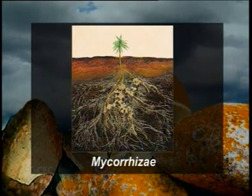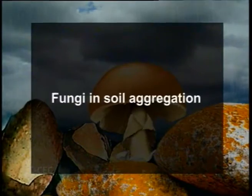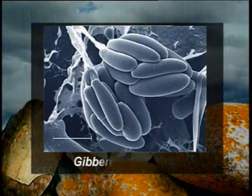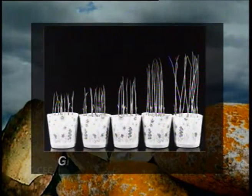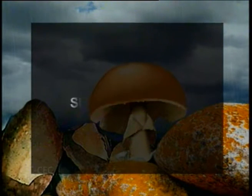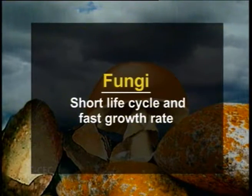Fungi also form mycorrhizae — the symbiotic association of fungi with the roots of higher plants. The fungal partner derives food from the roots of higher plants and in return supplies mineral nutrients to the plant partner. These mycorrhizae are essentially important for the growth of many plants, including crops. Fungi also play a role in soil aggregation, as they secrete mucilaginous substances which help in soil aggregation and soil fertility. They also form a source of growth hormones — for example, Gibberella fujikuroi is an important source of the plant growth hormone gibberellin.